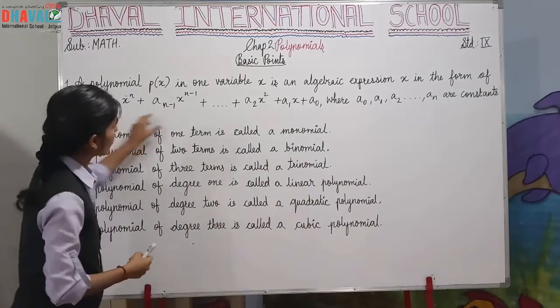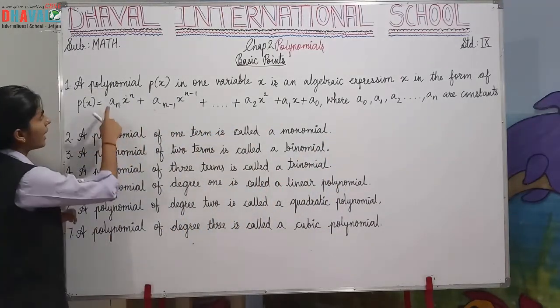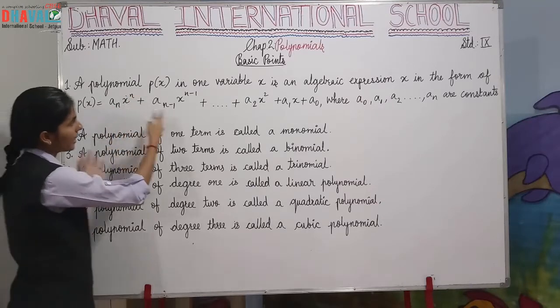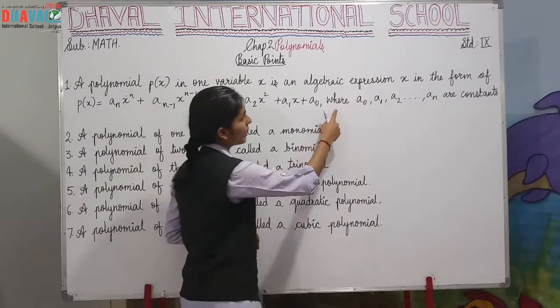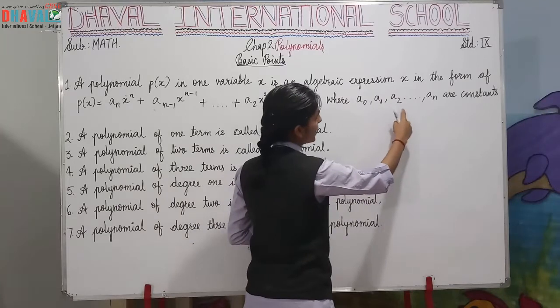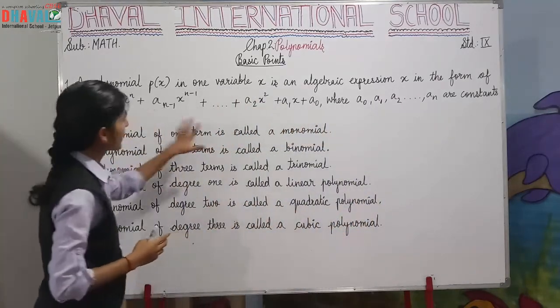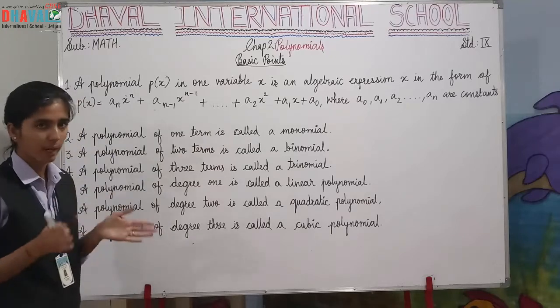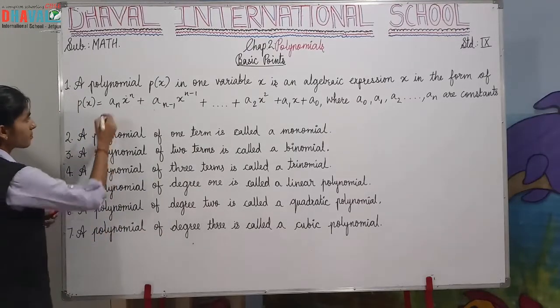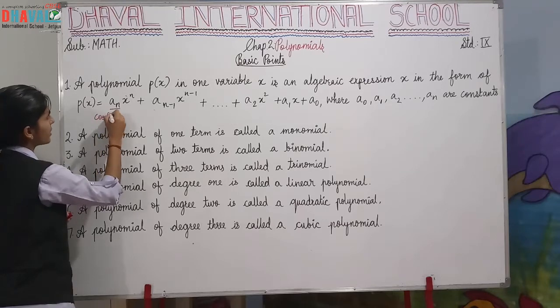P(x) equals to An times x to the n and continuing, where A0, A1, A2 up to An are constants. So in this algebraic expression,